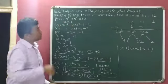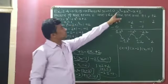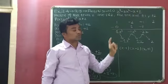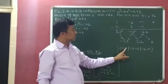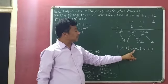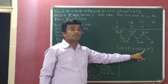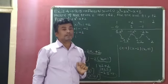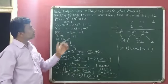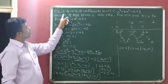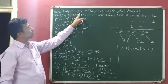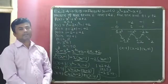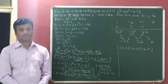Now see children: the factorization of x raised to 3 minus 2x square minus x plus 2 is: in the first bracket x minus 1, in the second bracket x minus 2, and in the third bracket x plus 1. So this is the final answer. This is the explanation of Exercise 2.4 Question Number 5 — Factorize. I hope you can understand this. Thank you.